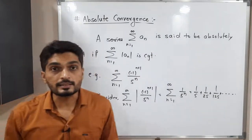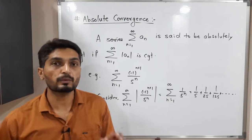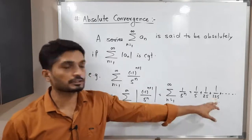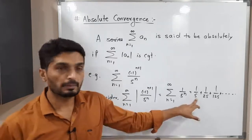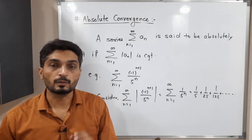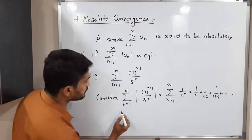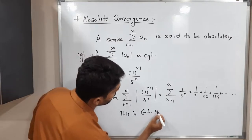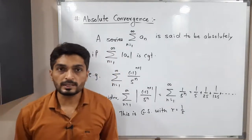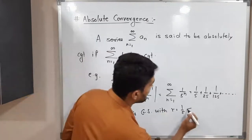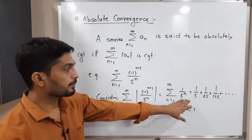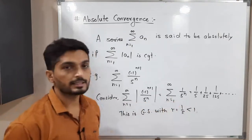We can easily see this is a geometric series: if you multiply any term by 1/5 you get the next term. So this is a geometric series with common ratio r = 1/5. We have already proved that a geometric series with common ratio less than 1 is convergent. Therefore, this series is convergent.